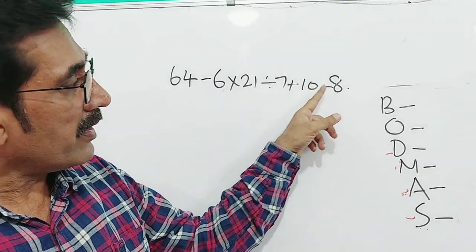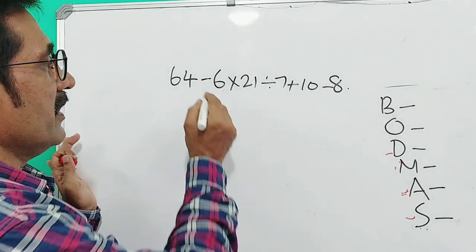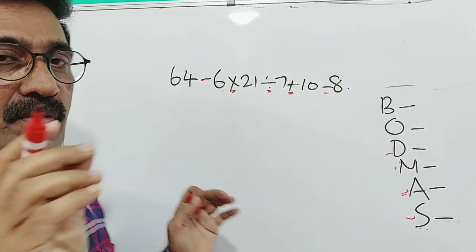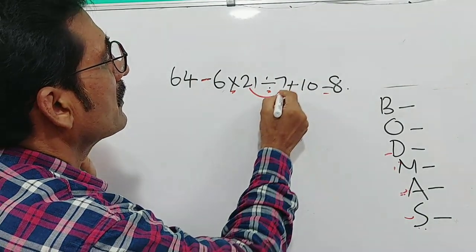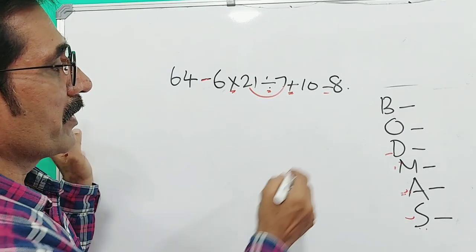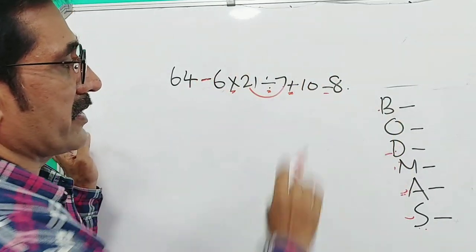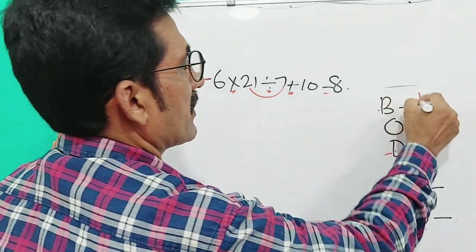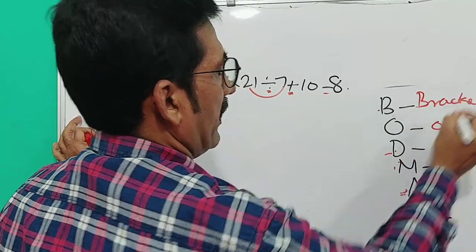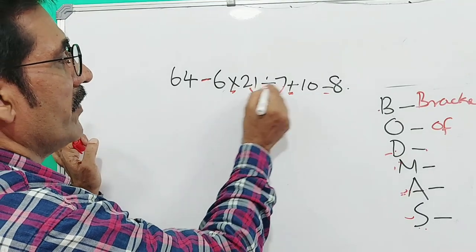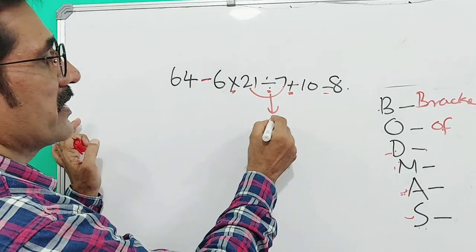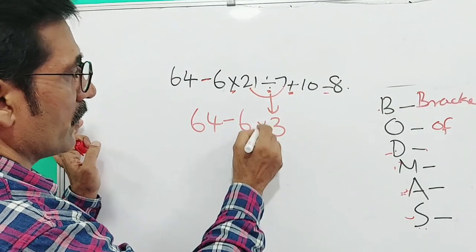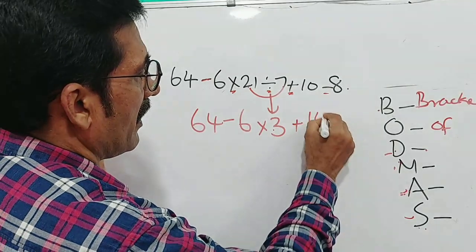See this question: 64 minus 6 into 21 divided by 7 plus 10 minus 8. Here you can see subtraction, multiplication, division, addition, and again subtraction. There is no bracket and no 'of', so we apply BODMAS: division first. 21 divided by 7 is 3. We can now rewrite the expression as: 64 minus 6 into 3 plus 10 minus 8.